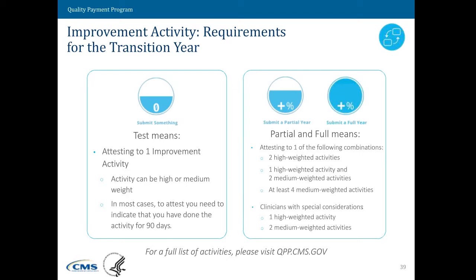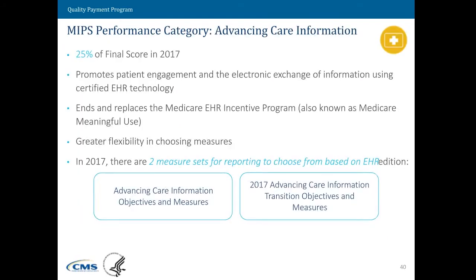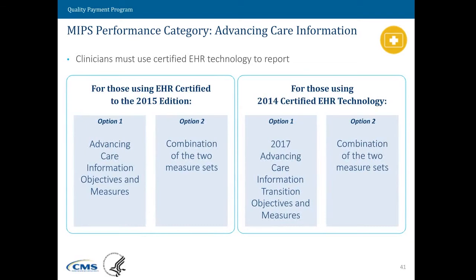Let's move on to slide 40. The last performance category is Advancing Care Information, which deals with the usage of electronic health records, and this counts for 25 points towards your final score. What we've done with this category is we've really restructured it from the way it previously worked under Meaningful Use. We've heard a lot of feedback that it wasn't working — that we didn't have enough flexibility, and that if you missed one measure you would potentially fail completely. So we've reworked it to build in a base score and a performance score, where there are two sets of measures to choose from based off of your edition of EHR. On slide 41, you can see what those measure sets are, whether you have the 2015 edition or the 2014 edition of certified EHR technology.